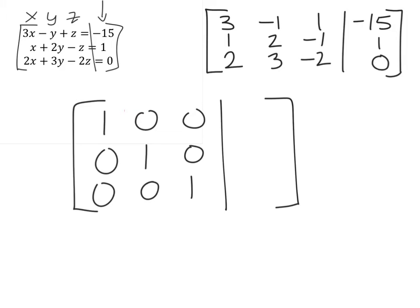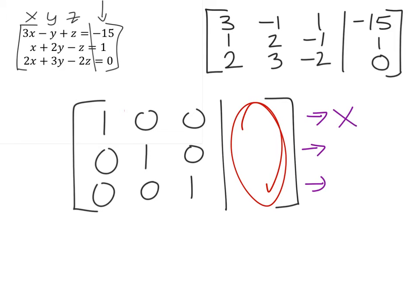Now remember, what we want to get out of this matrix is to have ones along this diagonal and then all of these other values are zeros, and then it would give us some values for each of these individual equations in this column. The reason for that is because when we pull these out, you can see that this would be the one x from the x column, which gives us our answer for x, y, and z. So we need to get a one where that three is, and where that negative two is along this diagonal, which will allow us to eliminate the other values and create zeros in these other positions.